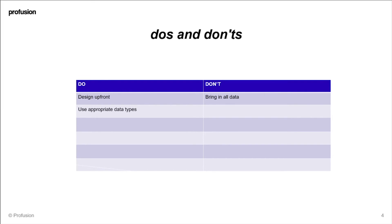When you're creating the attributes within the tables, make sure that you're using the appropriate data types. Don't make every single field a string — if it's more relevant to make them booleans, dates, or integers, then do so. That can bring benefits not only from an efficiency point of view but also a usability point of view within the UI.